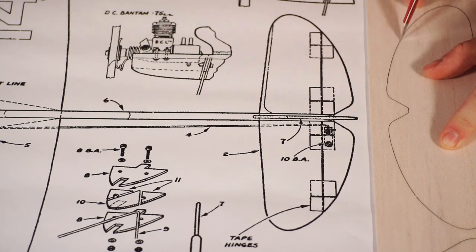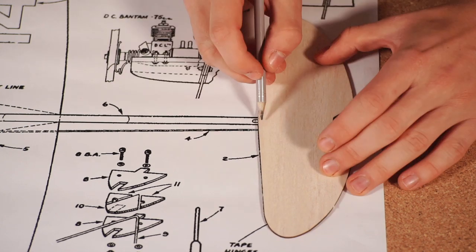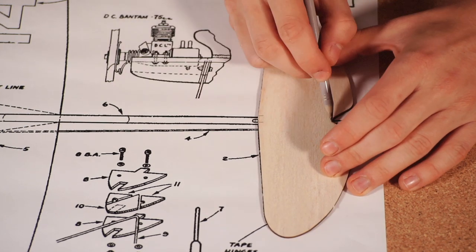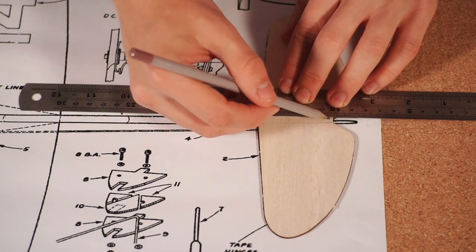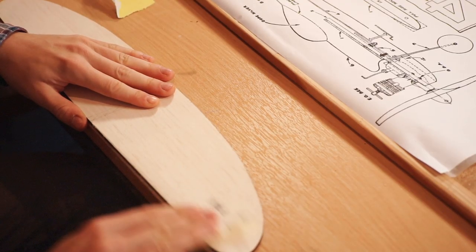The laser-cut parts can be removed rapidly by releasing the tabs with a sharp knife, and then sanding can commence. Make sure to check out that previous video showing how to assemble an airframe like this in more detail.